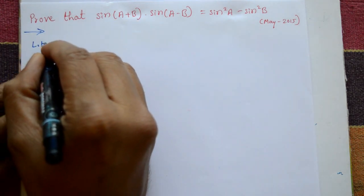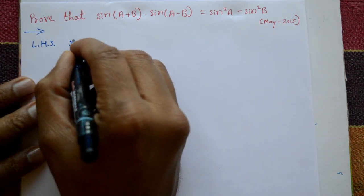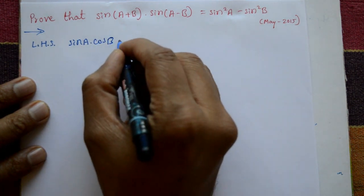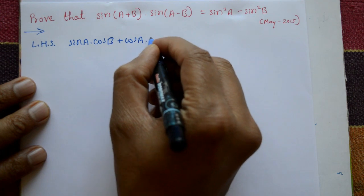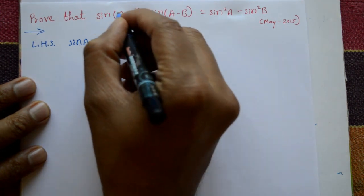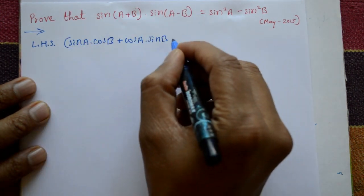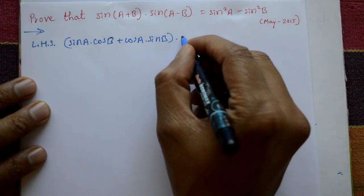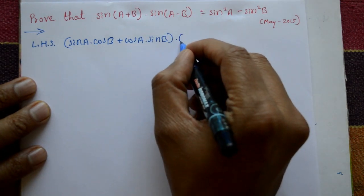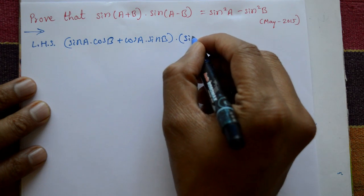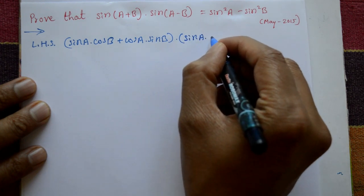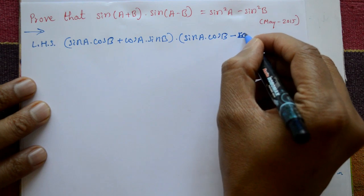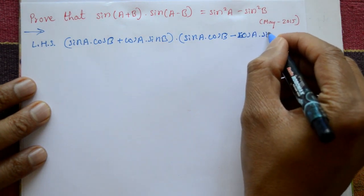Taking the left hand side: sin(a+b) expands to sin a·cos b plus cos a·sin b. The first term is done. Now sin(a-b) expands similarly, with the sign changed: sin a·cos b minus cos a·sin b.